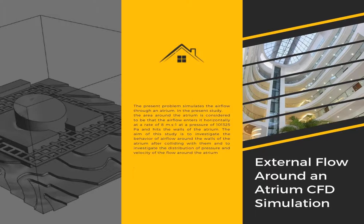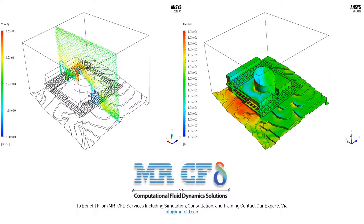Therefore, we look into an external flow around an atrium CFD simulation. The present problem simulates the airflow through an atrium, where the airflow enters horizontally at a rate of 8 meters per second at atmospheric pressure and hits the walls of the atrium. The aim of this study is to investigate the behavior of airflow around the walls of the atrium building after collision and the distribution of pressure and velocity around the atrium building.